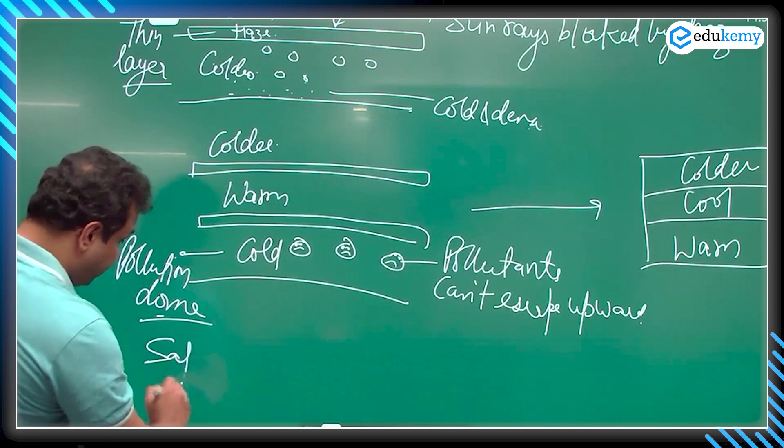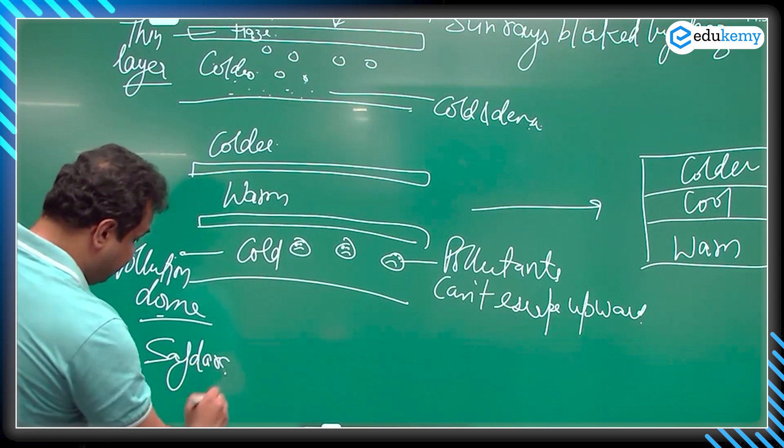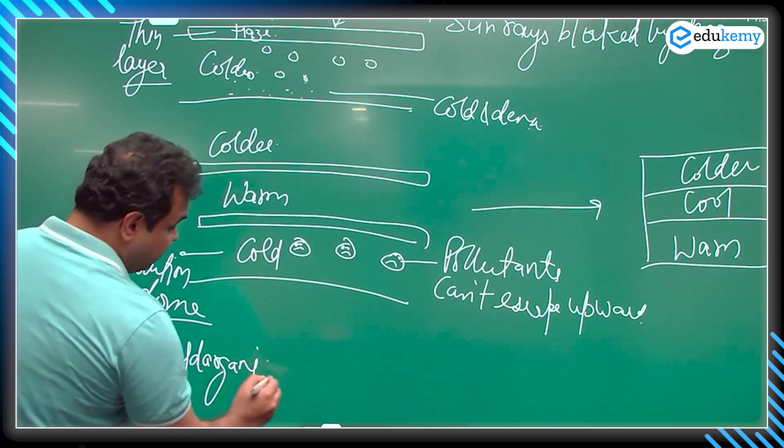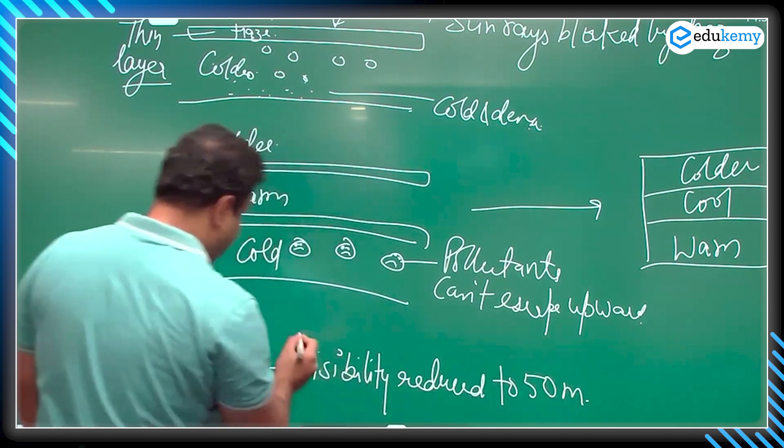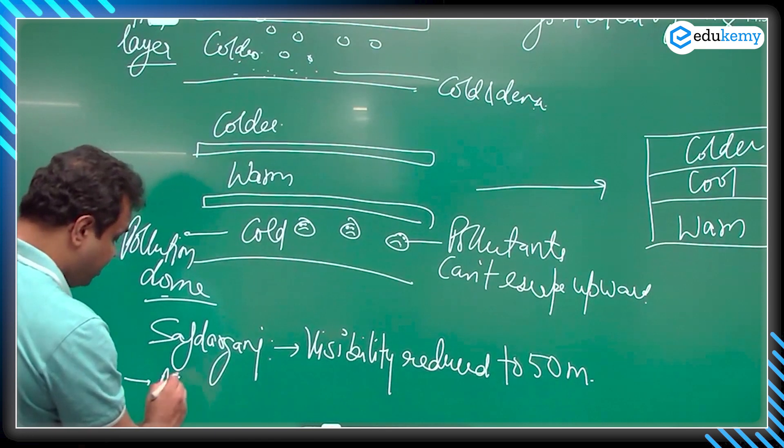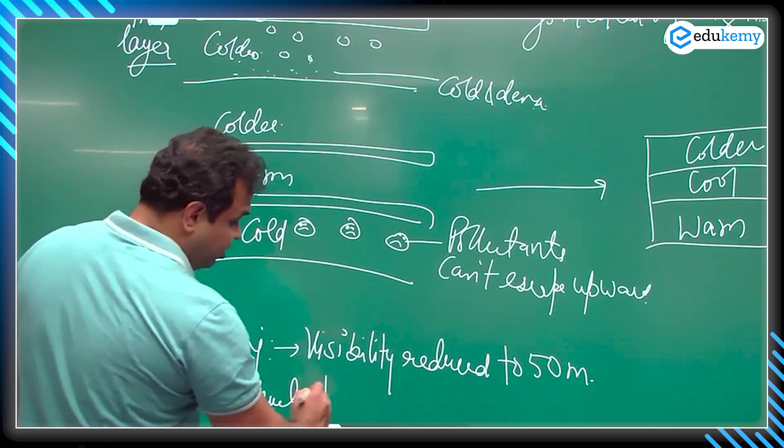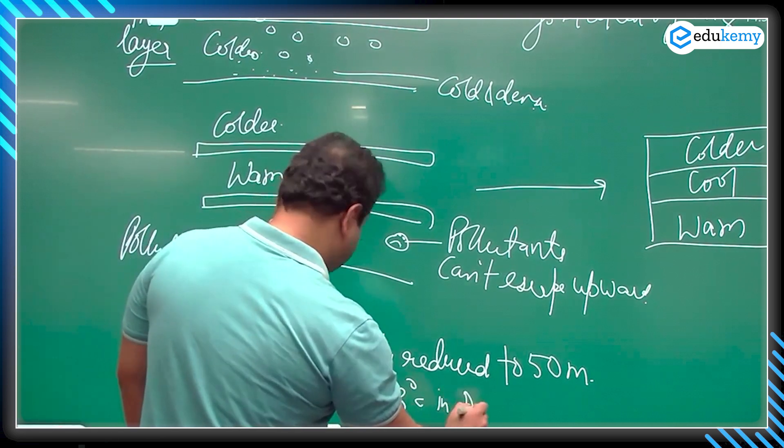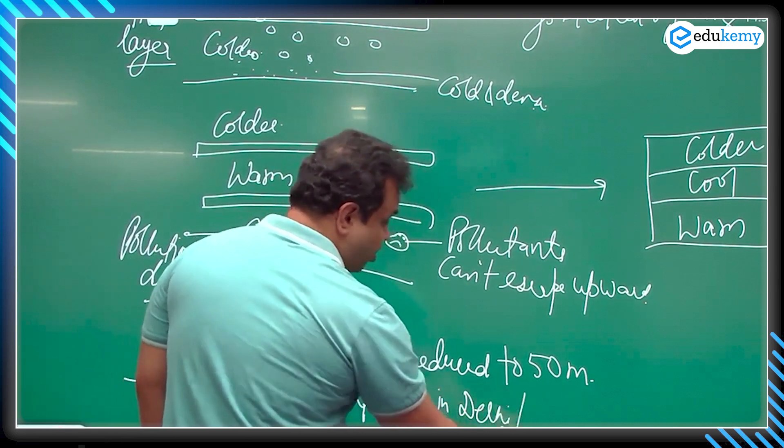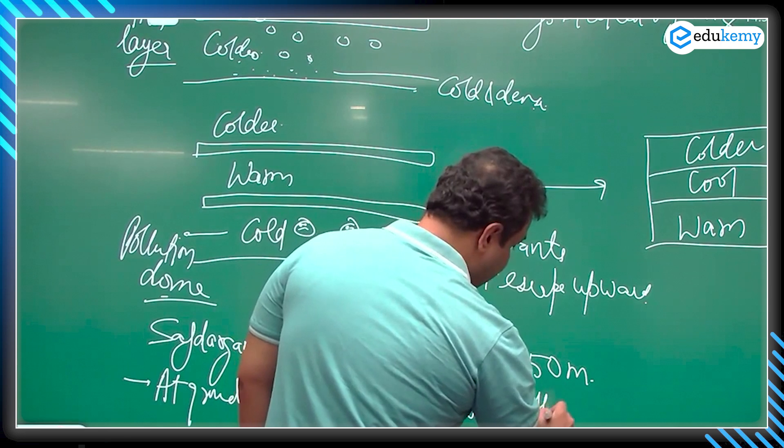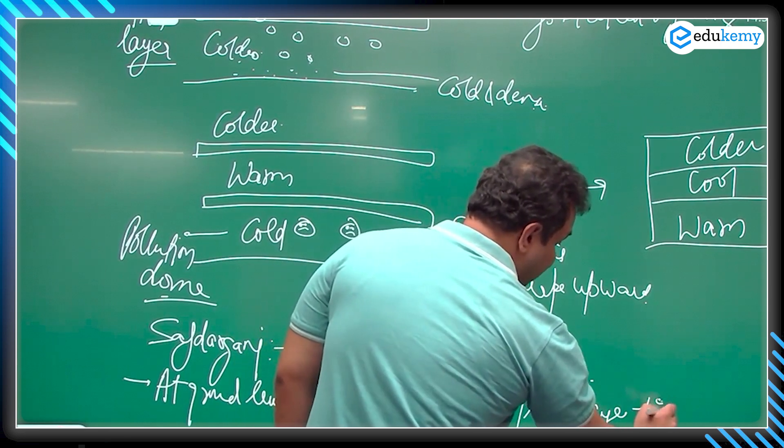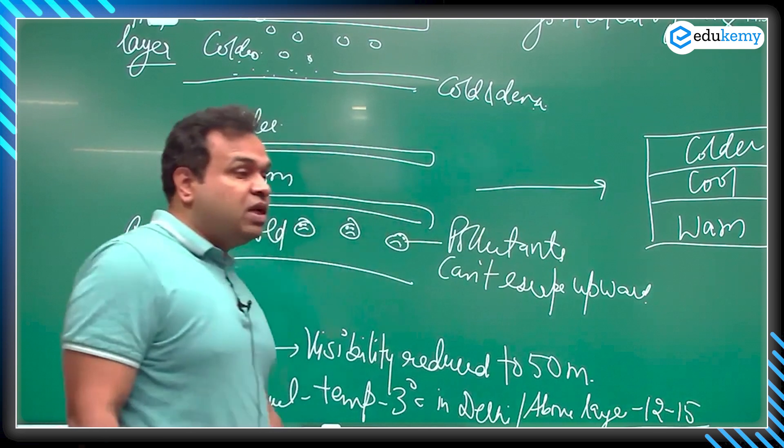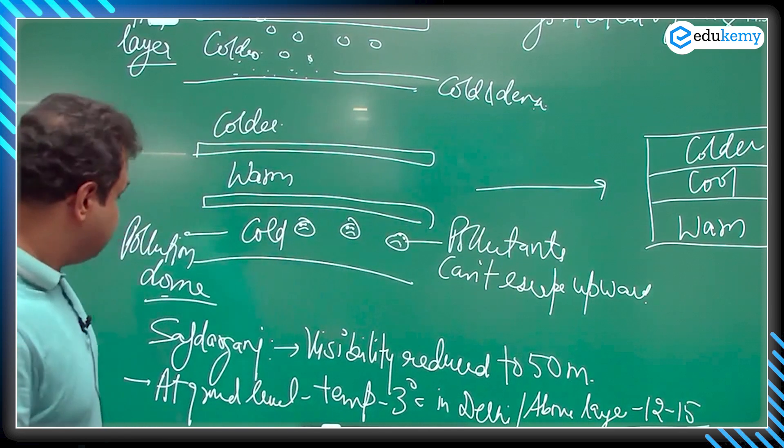At Safdarjung, according to the IMD Delhi, the visibility gets reduced to 50 meters and at ground level temperature is around 3 degrees Celsius in Delhi. That is at ground level, and on top, on the above layer, the temperature is around 12 to 15. That should be the opposite in normal circumstances.